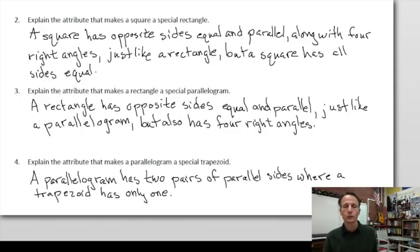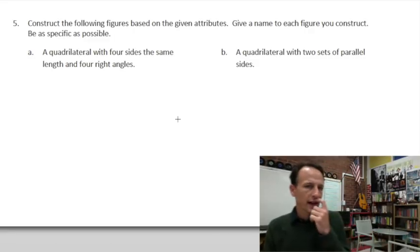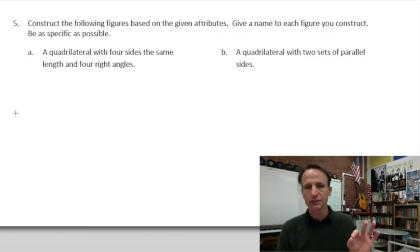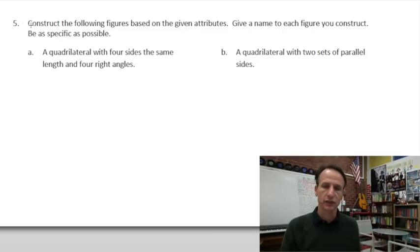You see we're cruising through this homework time. Let's keep cruising. And in number five, we have the following instructions. We're practically done. We just have four figures to draw here. Construct the following figures based on the given attributes. Give a name to each figure you construct, being as specific as possible, which we discussed already in the previous ones. So first on letter A, we're to draw a quadrilateral with four sides the same length and four right angles.